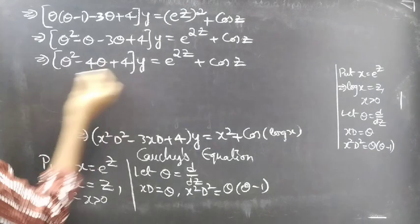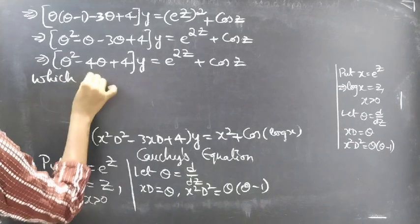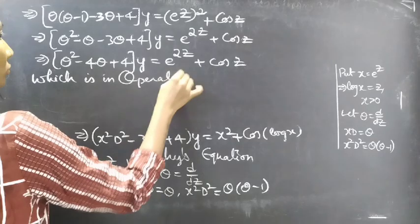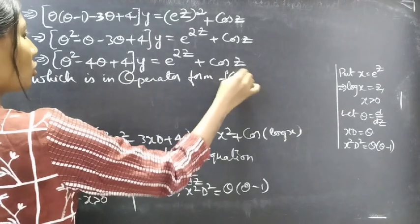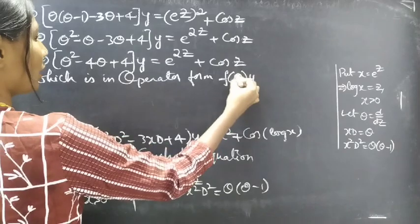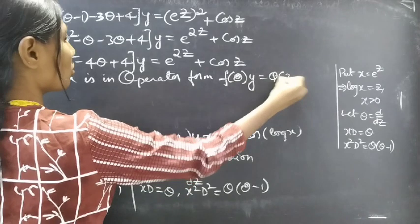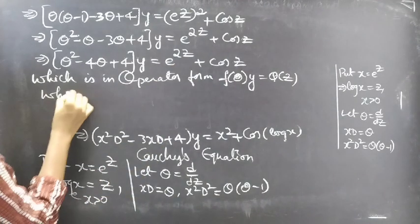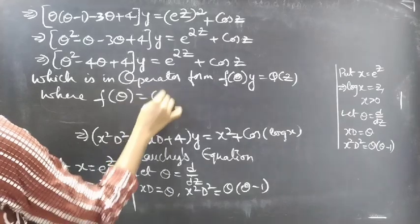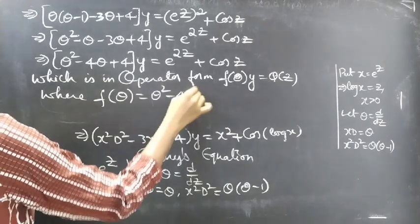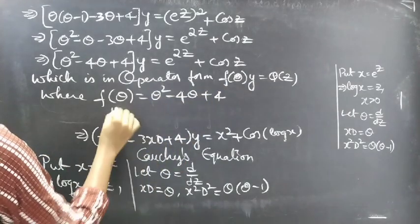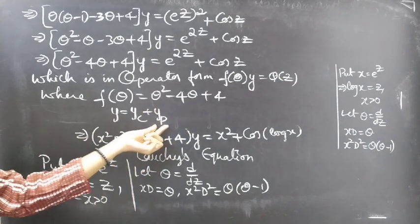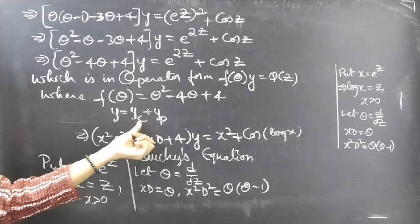This is also in operator form: f(theta) · y equals some function of z, where f(theta) equals theta² minus 4·theta plus 4. Now we need to find the general solution, given by y equals yc plus yp. Let's now find yc and yp.